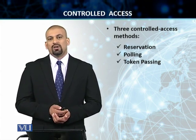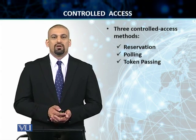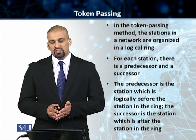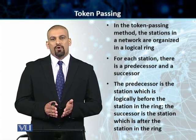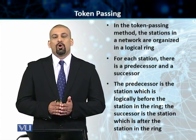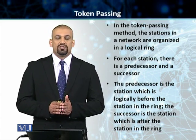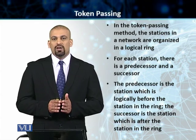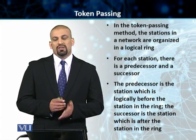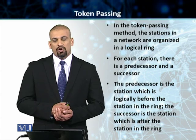We now go on to a third method or protocol which is called token passing. In token passing, the stations in the network are organized in the form of a logical ring — not a physical ring necessarily. So even if the network is not a physical ring, we can still employ this token passing technique because we just need the stations to be in a logical ring.